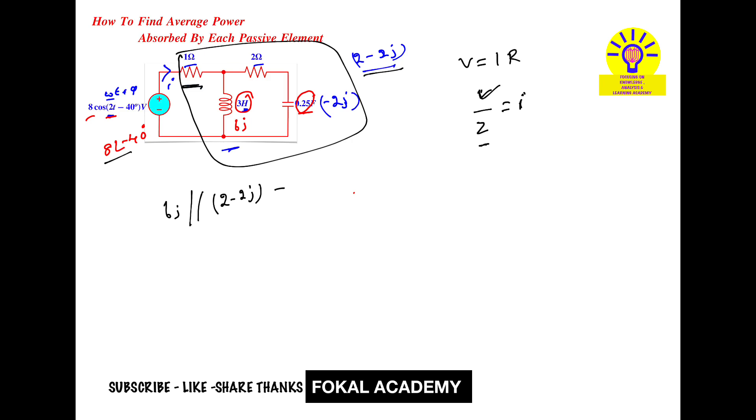The parallel combination of 6j and (2 - 2j) ohms is in series with the 1 ohm resistor for the overall impedance. Current I = V/Z = 8∠-40° / [1 + (6j)(2-2j)/(6j + 2-2j)]. Simplifying: the parallel part is (6j)(2-2j)/(6j + 2-2j), and this plus 1 gives the total impedance.